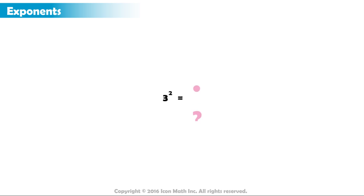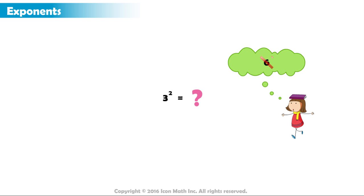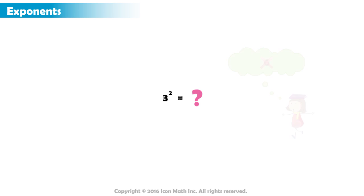Now you try: 3 to the power of 2. Be careful — the answer is not 6. 3 to the power of 2 equals 3 times 3, which equals 9.